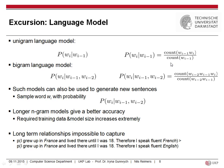You count how often you see a bigram, trigram, and so on. Such models can also be used to generate new sentences - you start a sentence and the machine finishes it by sampling with certain probabilities. Longer n-gram models give better accuracy but require more training data and model size increases extremely. Long-term relationships are impossible to capture. For example, 'I grew up in France and lived there until I was 18, therefore I speak fluent French' is more likely than the same sentence ending in 'English' - but capturing this distinction in an n-gram model is nearly impossible.